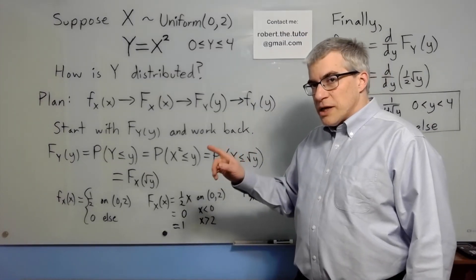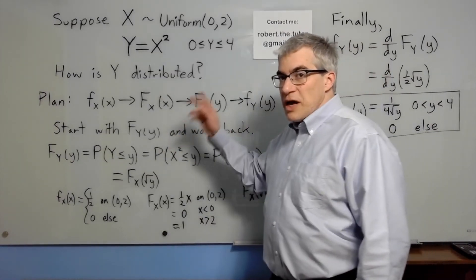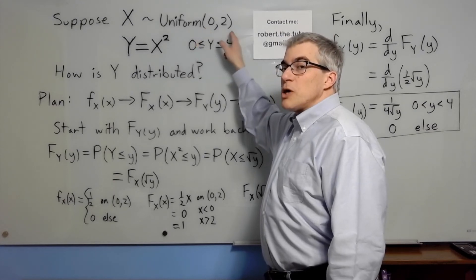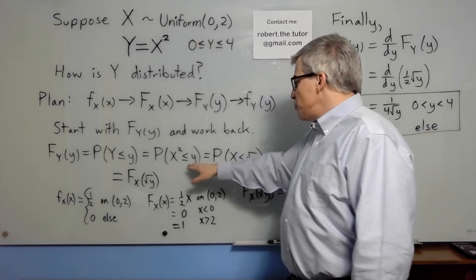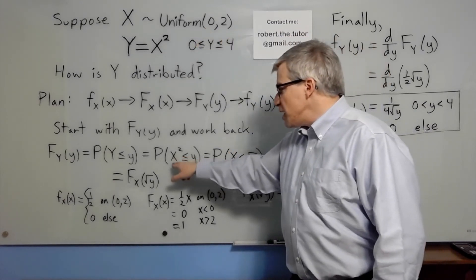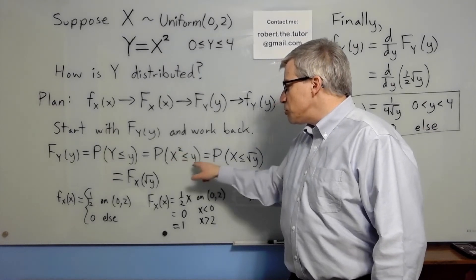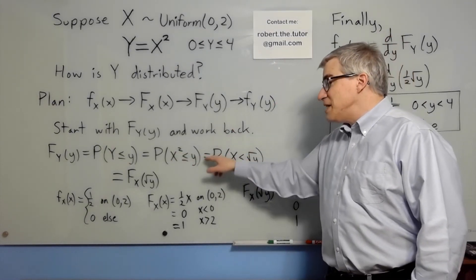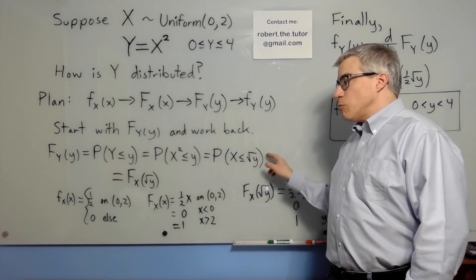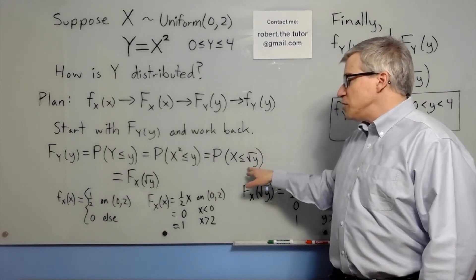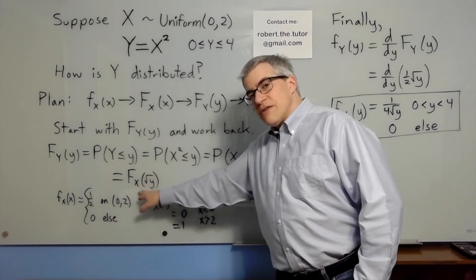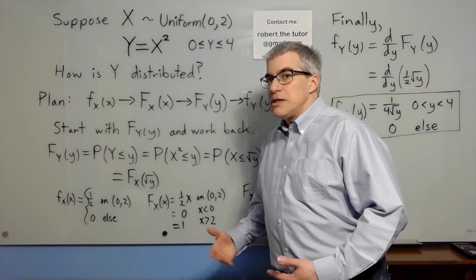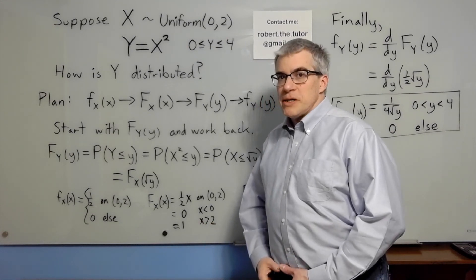If I had chosen x to have negative and positive values — say, uniform from minus one to one — then this expression would have been slightly more complicated. X squared less than or equal to y would mean that x has to be between negative square root of y and square root of y, which means we would have two CDFs of x subtracted. But that's not a big difference from the example we already did.